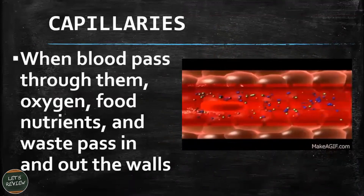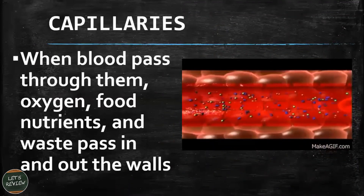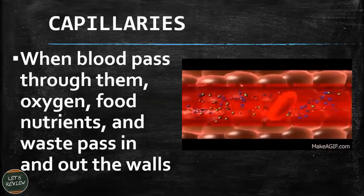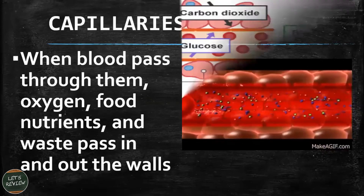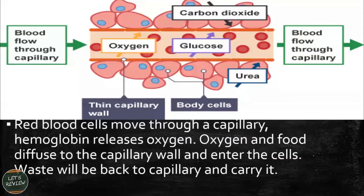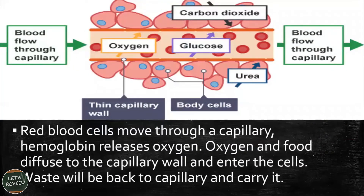When blood passes through the capillaries, oxygen, food, nutrients, and waste pass in and out of the walls. The red blood cells move through the capillary, hemoglobin releases oxygen, and oxygen and food diffuse through the capillary wall and enter the cells. Waste is then returned to the capillary and carried away.